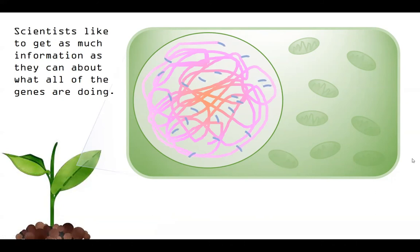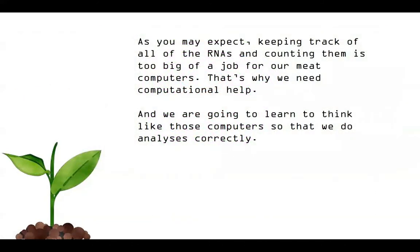Keeping track of all of those transcripts at once, all of those RNAs, is going to be too big of a job for our brains to actually handle. So what we're going to be doing is taking a lot of the data that's collected when we sequence all of these transcripts happening in a plant at one time, and putting these in an order that we ultimately will be able to understand. Our goal is to identify certain types of RNAs that might be present in the sample, specifically long non-coding RNAs.